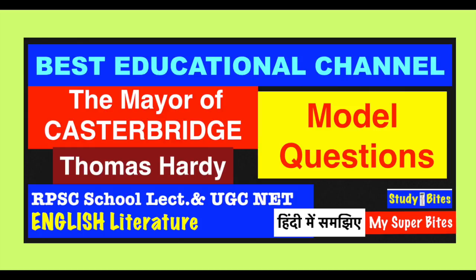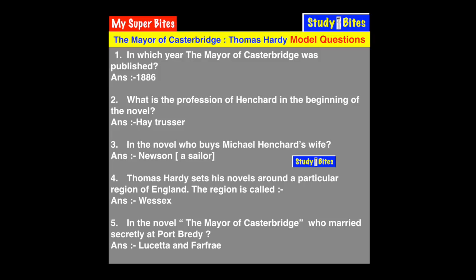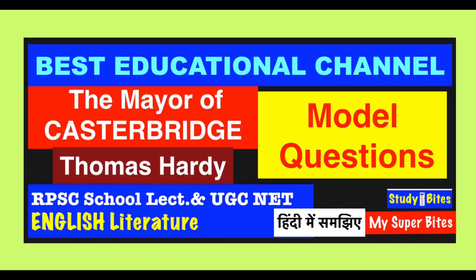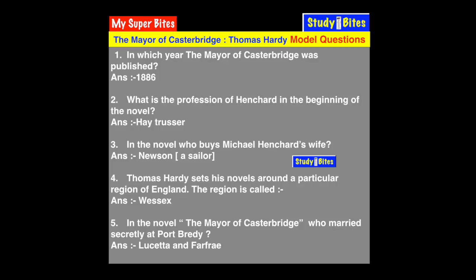Question 1: In which year was The Mayor of Casterbridge published? It was published in 1886. Thomas Hardy was an Edwardian poet and novelist, writing after the Victorian era and just before the modern era.